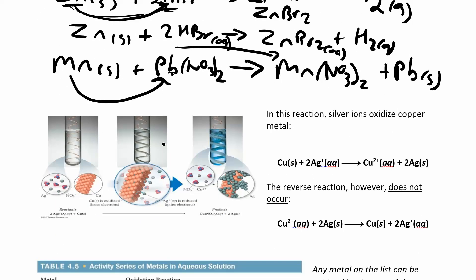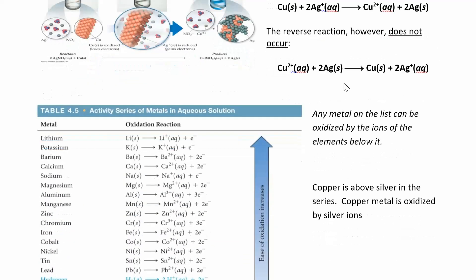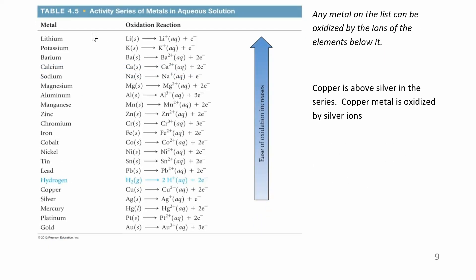We have a chart for that, and you don't have to memorize it — it will be given to you on an exam. The metals at the top of the list are very active, meaning they'll easily be displaced in a reaction. The ones at the bottom — copper, silver, mercury, platinum, gold — are things you make coins and jewelry out of. You don't want them to dissociate into ions every time you react them with water or an acid.